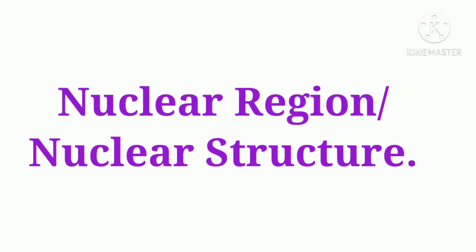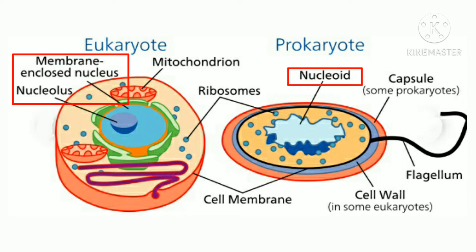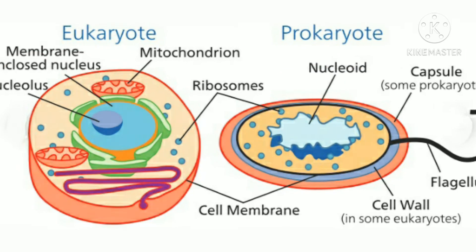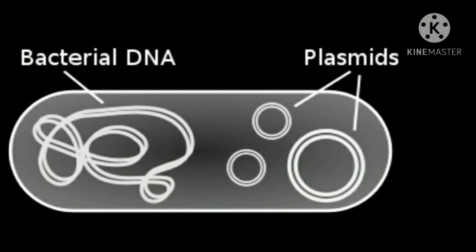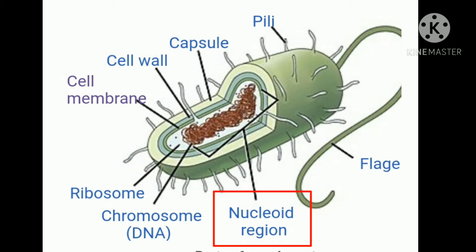Nuclear region or nuclear structure. Prokaryotic and eukaryotic cells contain a nuclear region which houses the cell's genetic material, surrounded by cytoplasm. The genetic material of a prokaryotic cell is present in a nucleoid — a poorly demarcated region of the cell that lacks a boundary membrane to separate it from the surrounding cytoplasm.